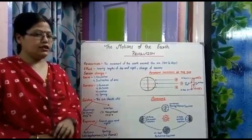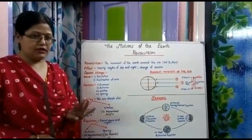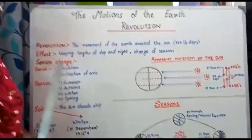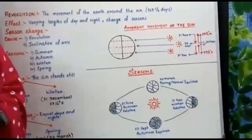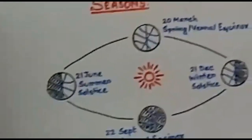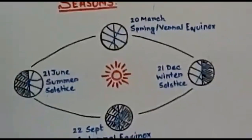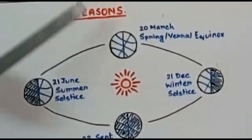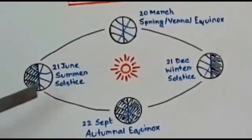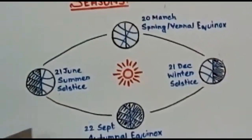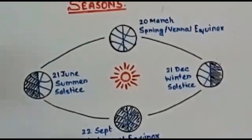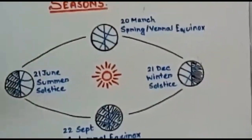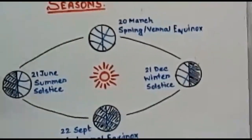We basically have four main seasons: summer, autumn, winter, and spring. Summer, winter, spring, and autumn are related to two topics — one is solstice and the other is equinox.